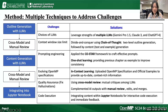For the choice of LLMs, we leveraged multiple models, including Gemini Pro 1.5, Claude 3, and ChatGPT-4 to take advantage of their individual strengths. LLMs have a limit to how much content they can process at one time, so we applied a divide-and-conquer approach using chain-of-thought reasoning, generating two-level outlines before generating detailed content. To ensure consistency and relevance, we designed prompts using the COSTAR framework, and used one-shot learning by providing examples from previous chapters to improve continuity.